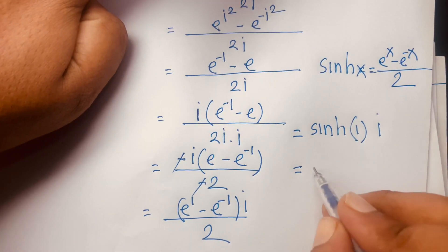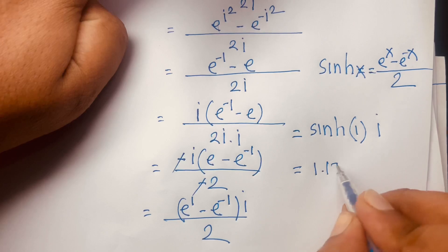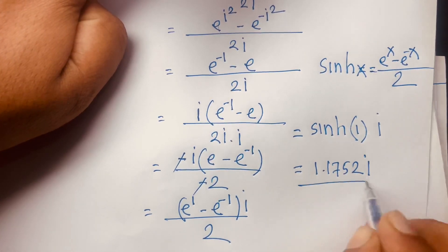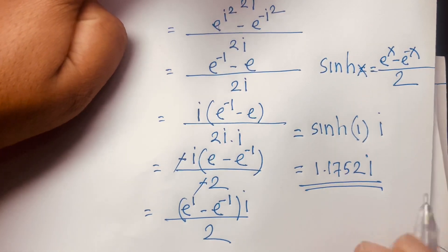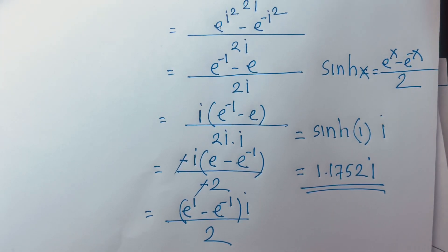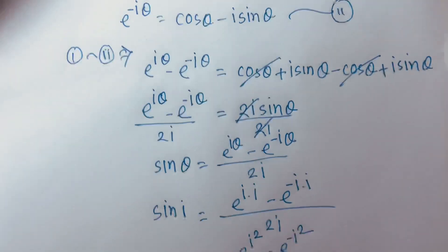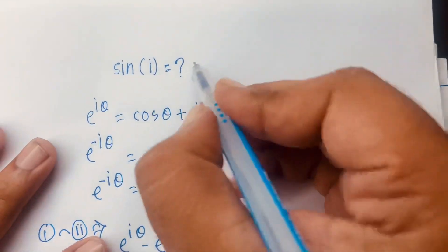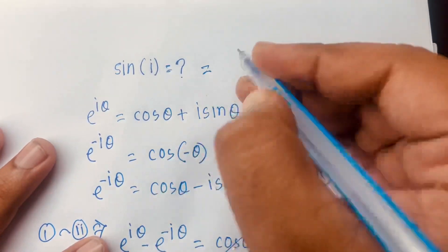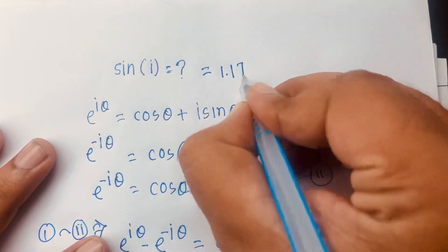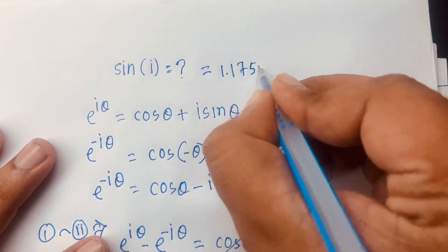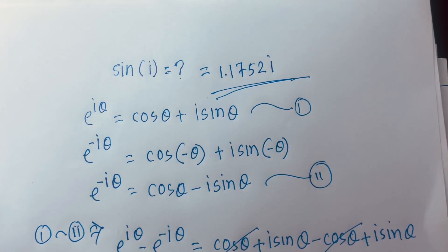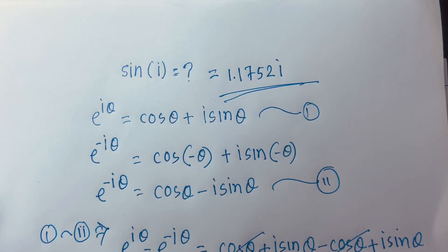Using a calculator, sinh(1) equals approximately 1.1752. Therefore, sine of i equals 1.1752·i. This is our final answer: sine of i equals 1.1752·i.